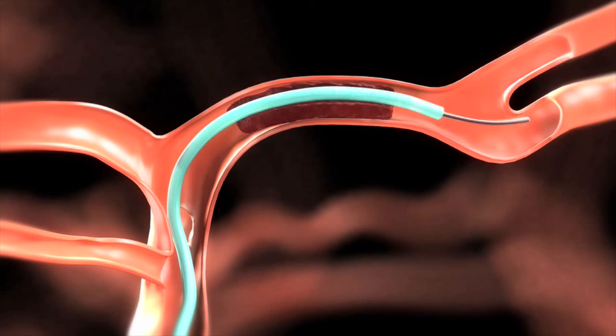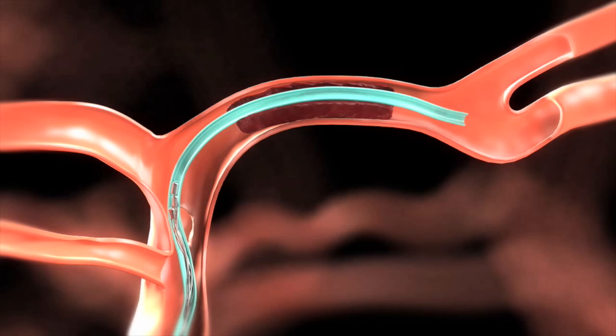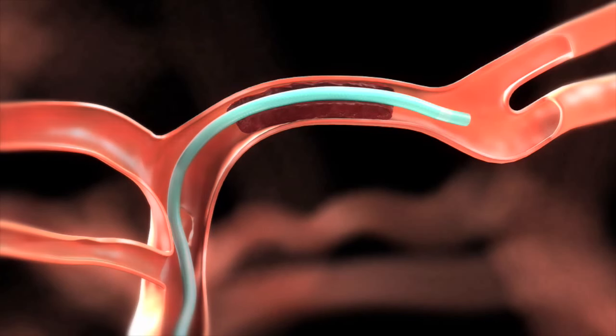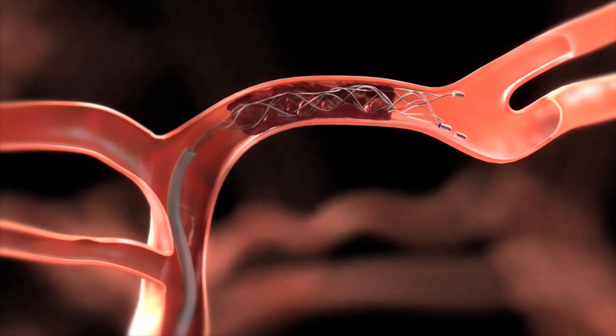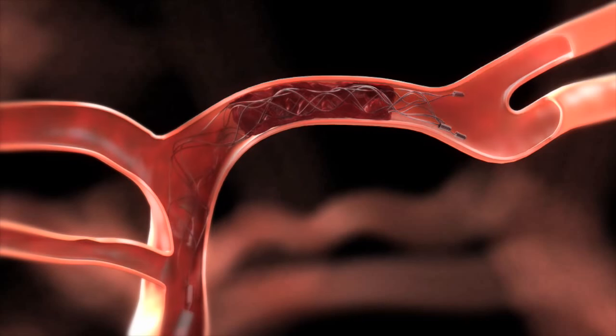Once we cross the blockage, we bring up a mechanical thrombectomy device, which is kind of a stent on a stick configuration. It's a stent-like device that we unsheathe within the clot in the blockage. You can see the stent is opening up and actually restoring blood flow immediately.